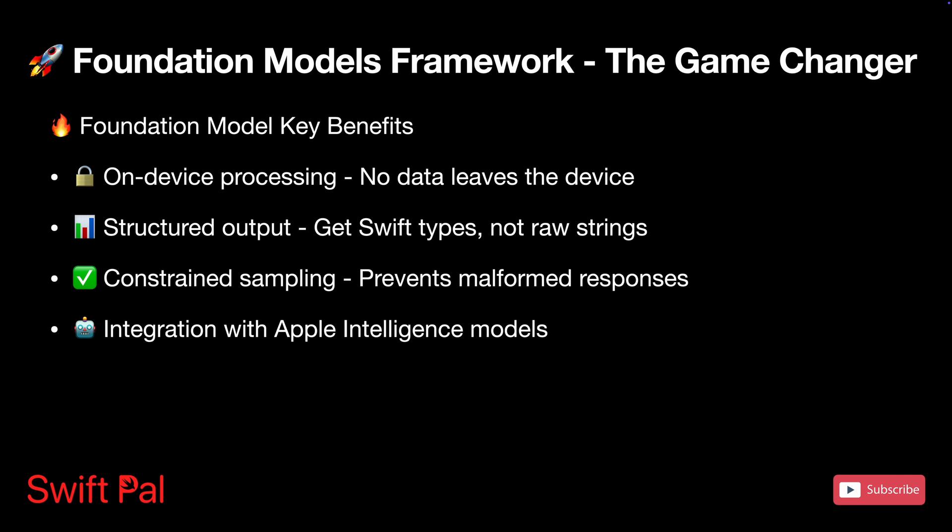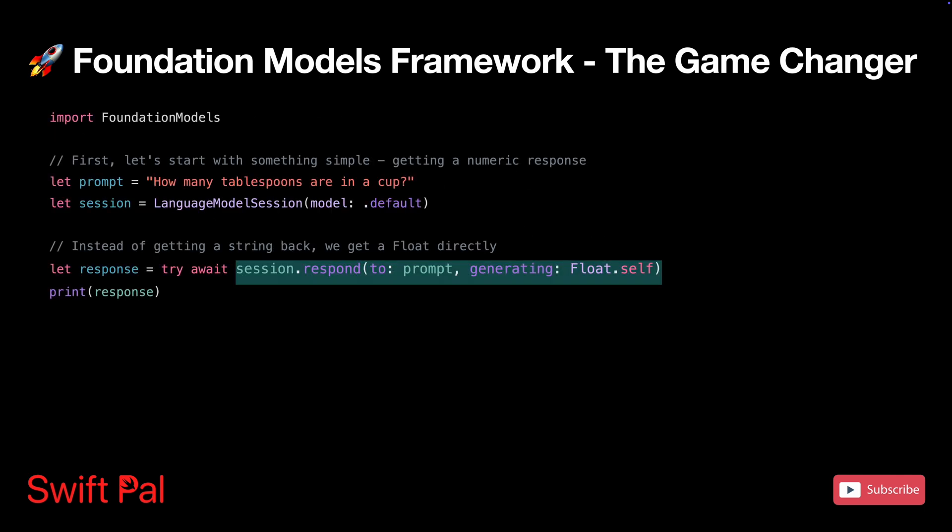The framework gives you direct access to the same language models that power Apple Intelligence, running efficiently on device — no network calls, no API cost, and most importantly, no sending user data anywhere. The real magic is something called guided generation. Instead of getting back a raw string that you have to parse and hope it's in the format you expected, you can define Swift data structures and the model will return properly typed objects.